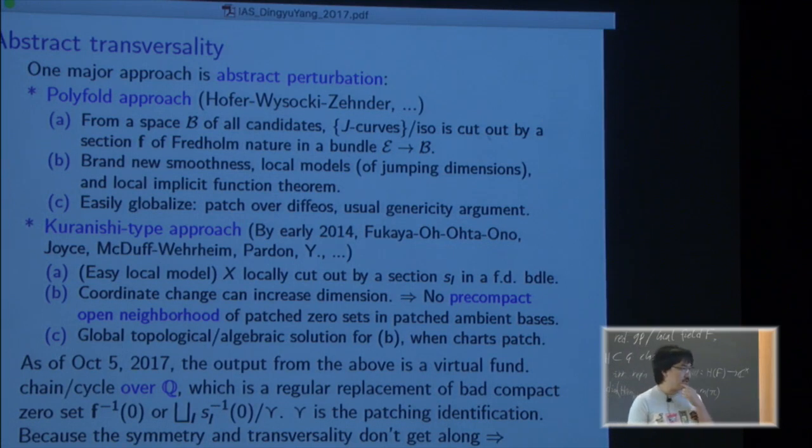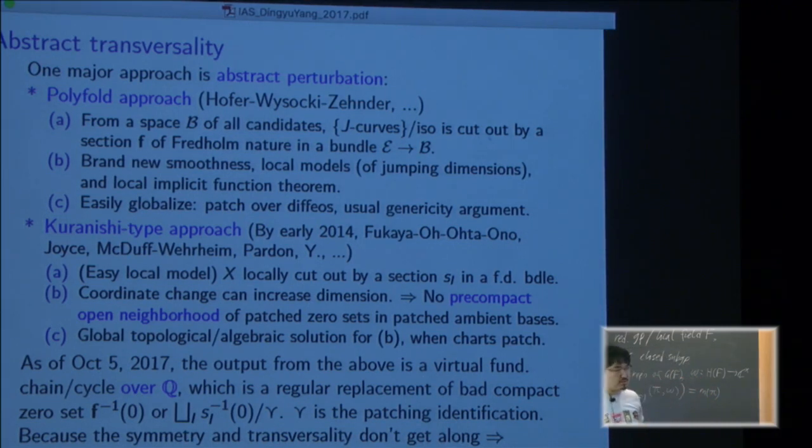So as of today the output of those very powerful machinery gives you Q-valued virtual fundamental cycles or chains, because symmetry and transversality don't go together and you have to use multi-sections with branches. Each branch is transverse with the weights.